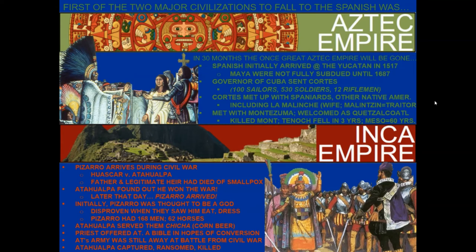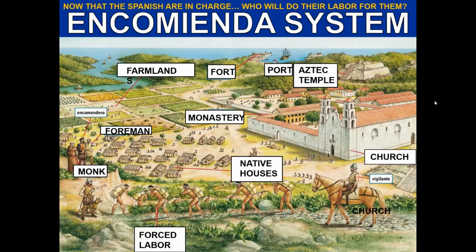Now that the Spanish are in charge, they've got to figure out who is going to work for them. They set up an entire system called the Encomienda system. The most important thing they would do is build a church — oftentimes on top of the remains of Aztec temples — almost first, and a fort, to show military and church power. They would then build large blocks of native houses, put a Spaniard in control often linked to a monk or priest, and start farming on a massive scale. They used this forced labor system to completely take control of the native population.